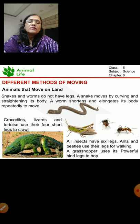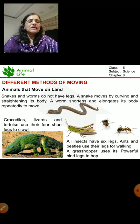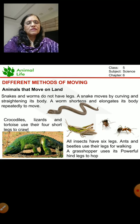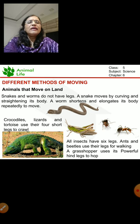Insects have six legs and can make use of all six legs. Like ants and beetles - they use their legs for walking. The grasshopper has got powerful hind legs and hops with the help of its hind legs.